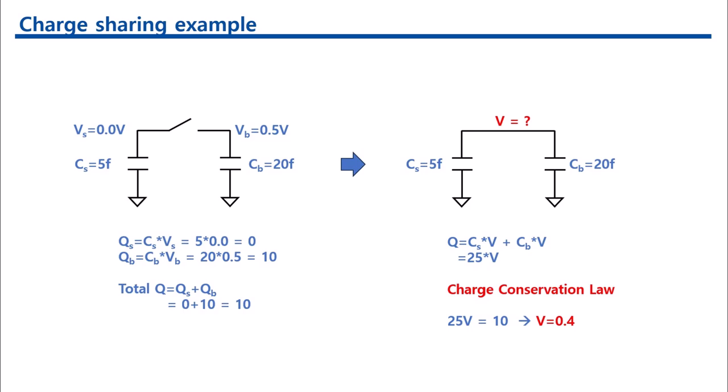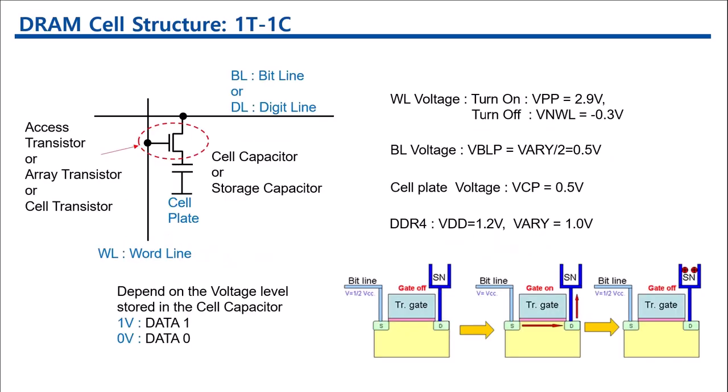DRAM makes use of this phenomenon. An MOS transistor, named access transistor, plays the role of switch. The gate is connected to word line, and the drain connected to bit line. This is the basic structure of DRAM cell.